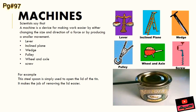I am showing you here with an example. I have put a picture of a tin, and we are opening the lid of the tin with the help of a steel spoon. This steel spoon is simply used to open the lid of the tin — it makes the job of removing the lid easier. So it is acting as a machine, specifically a lever.